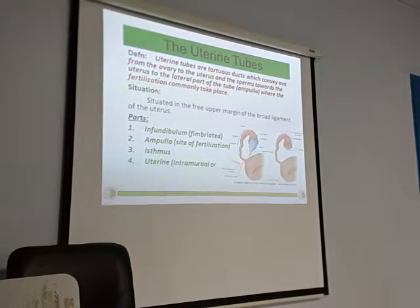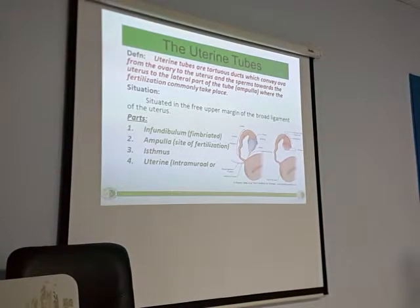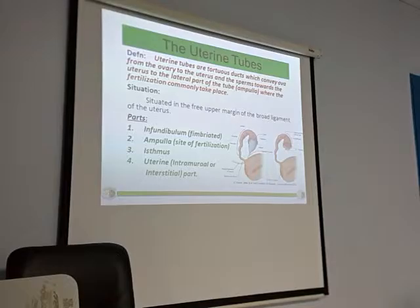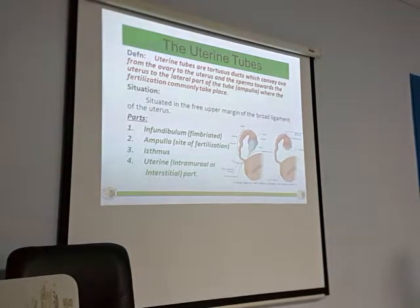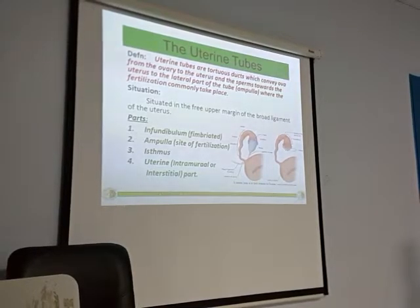It has come to this. This will be called as the uterine part, or it is called as the intramural part, or it is called as the interstitial part. So there are four parts: infundibulum, ampulla, isthmus, as well as the uterine part, intramural part, and interstitial part.